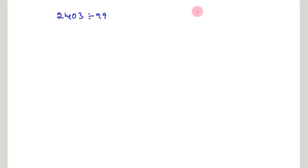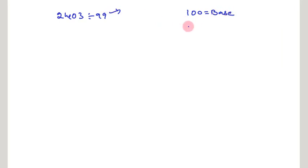That is 2403 divided by 99. In the Vedic maths, we will consider powers of 10 as a base. Here our divisor is 99, it is nearest to 100. So we consider base is 100. If base is 100, then divisor is 99. The difference between the divisor and base is 1. This is known as Nikhilam in Vedic maths.